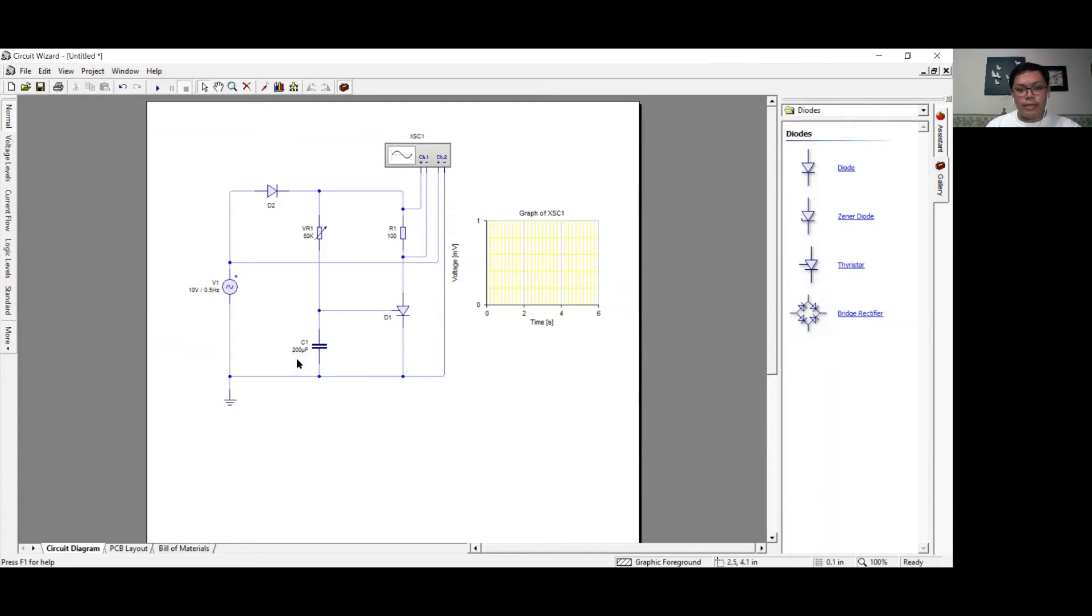The capacitor here is added so as to put a delay into the firing angle produced by the increase in VR1. The greater the capacitance of the capacitor here, the greater the delay in the firing angle which will be present here in the graph.